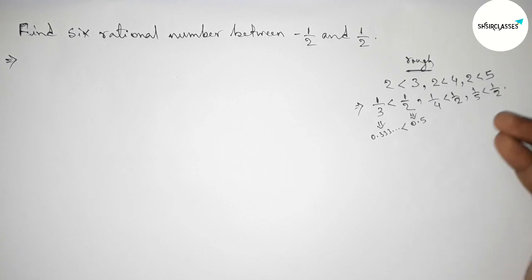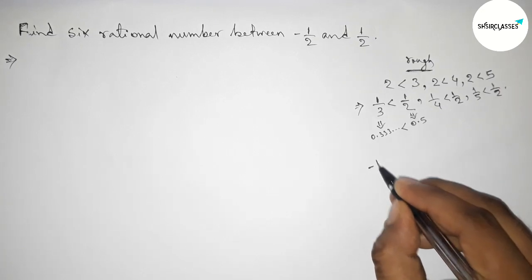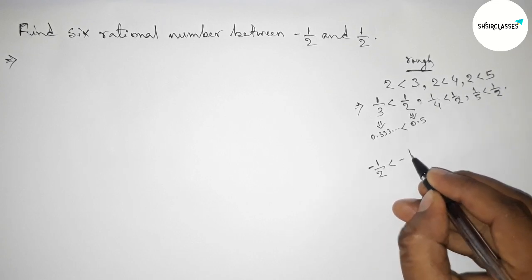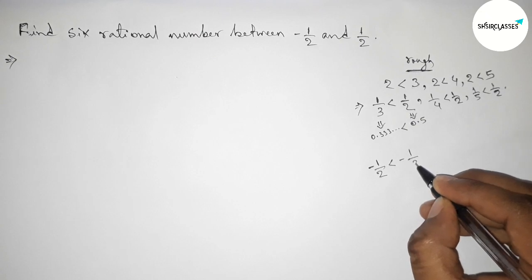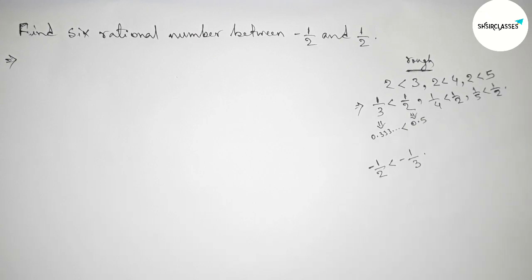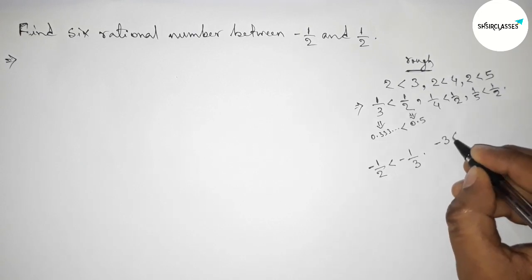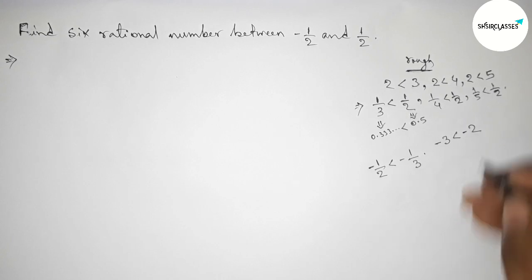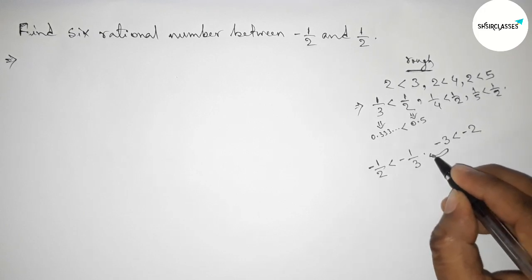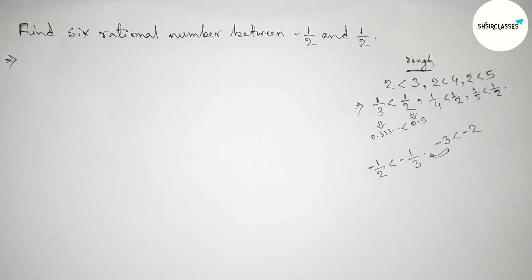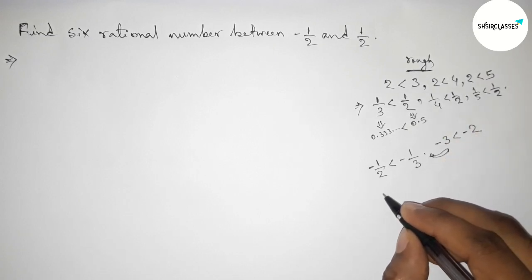Now for the negative case. Here minus 1 by 2 less than minus 1 by 3, because if you take 2 negative numbers, taking minus 3 less than minus 2, their inverse will be opposite, their inequality will be changed. Now next, taking similarly minus 1 by 2 less than minus 1 by 4.